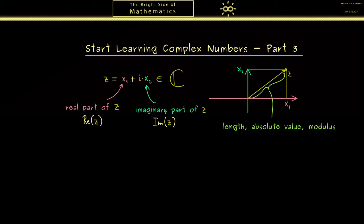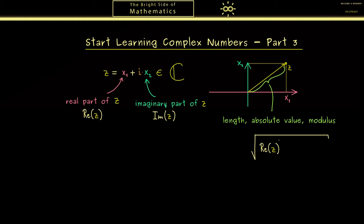This means that the length is given by the square root of real part of z squared plus imaginary part of z squared. This is what we call the absolute value and therefore it's denoted with bars around z.